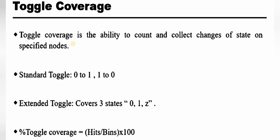Toggle coverage measures the ability to count and collect changes of state on specified nodes. There are two types: standard toggle coverage and extended toggle coverage. Standard toggle coverage has 0-to-1 and 1-to-0 transitions. Extended toggle coverage has three states: 0-to-1, 0-to-Z, 1-to-0, 1-to-Z, Z-to-0, and Z-to-1, where Z is an undefined state. The formula remains (hits / bins) × 100.